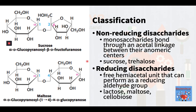On the other hand, reducing disaccharides are disaccharides in which one monosaccharide — the reducing sugar of the pair — still has a free hemiacetyl unit, or a free hydroxyl group attached to an anomeric carbon, that can perform as a reducing aldehyde group. Lactose, maltose, and cellobiose are examples of reducing disaccharides.